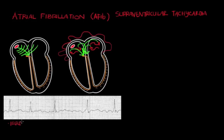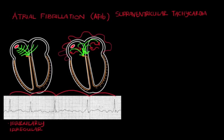Classically, the AFib EKG is said to be irregularly irregular. Notice how the distance between the R-R intervals is different with each beat. In a normal heart, you'd see evenly spaced R-R intervals. But with AFib, you have different distances between the R and the R intervals.